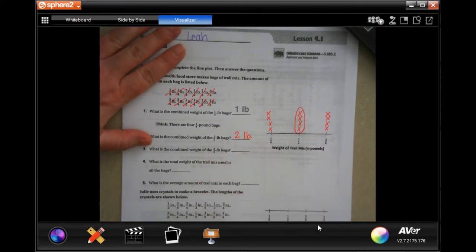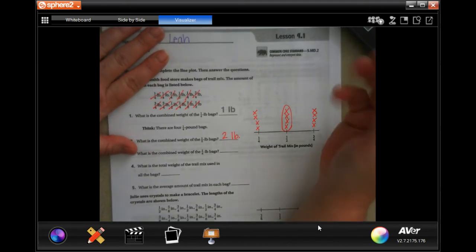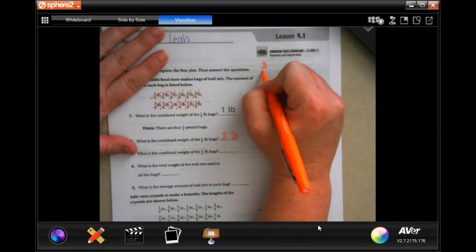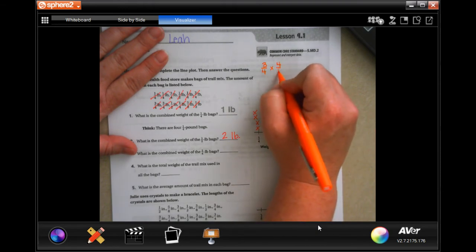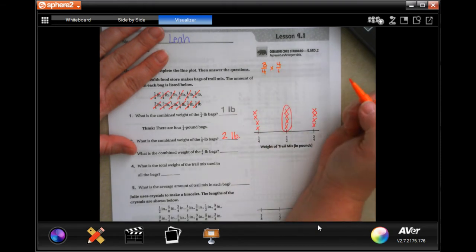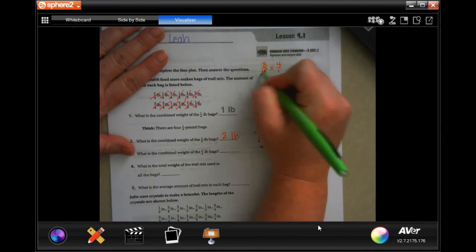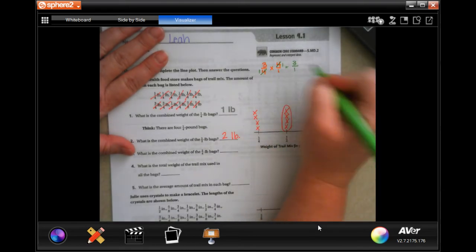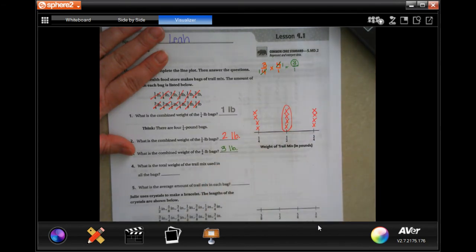What is the combined weight of the three quarter bags? Let's do it. I'm going to come up here and I'm going to go three quarters times one, two, three, four. I'm going to put that four over one because four over one is the same thing as four. Now I can cross-cancel. Those can now become one, and then multiply straight across. So it's going to be three, three pounds.